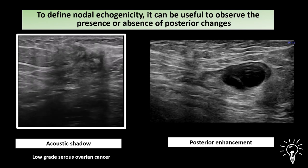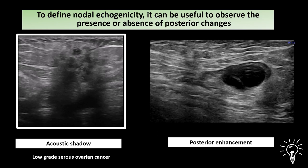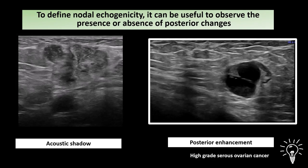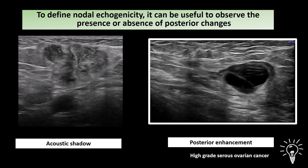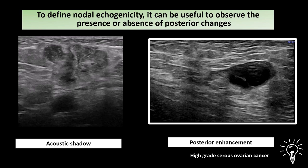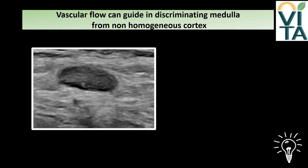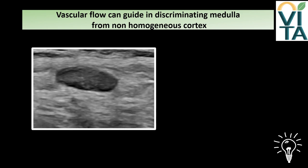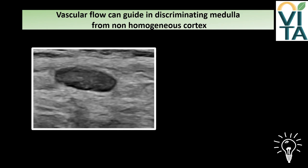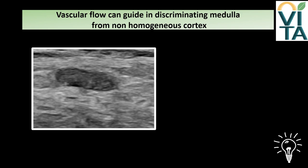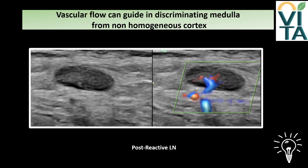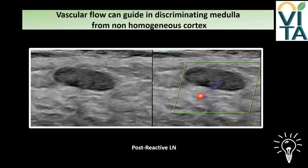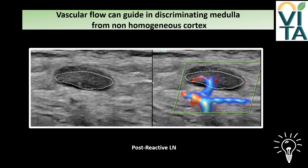To define echogenicity, it can be useful to observe posterior changes. An acoustic shadow is visible below calcification in this metastatic lymph node from low-grade serous ovarian cancer. On the right, posterior enhancement results from necrotic cystic areas due to infiltration from high-grade serous ovarian cancer. In some cases, distinguishing a completely non-homogeneous node from one with a not clearly visible medulla on grayscale alone can be demanding. However, switching on color Doppler allows identification of hilar vessels that guide attention to the center of the lymph node where a partial nodal core sign is present.